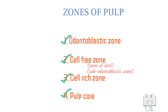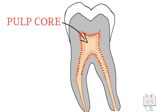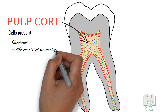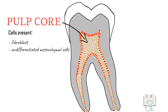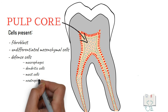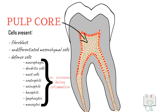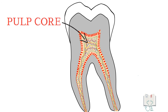The final zone is the pulp core, which is the biggest zone and forms the center of the pulp chamber and pulp canals. It has numerous cells but not as densely packed as in the cell-rich zone. Similar to the cell-rich zone, fibroblasts and undifferentiated mesenchymal cells are present. Additionally, it has many defense cells such as macrophages, dendritic cells, mast cells, neutrophils, eosinophils, basophils, lymphocytes, and monocytes, whose number increases during inflammation.